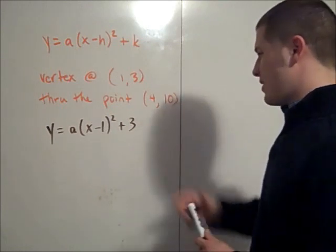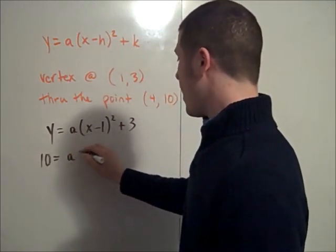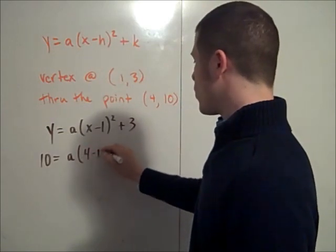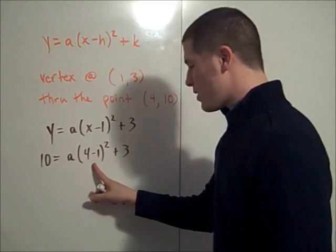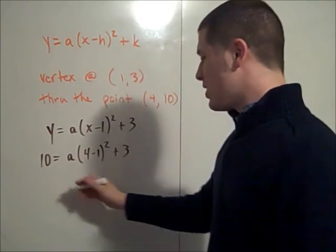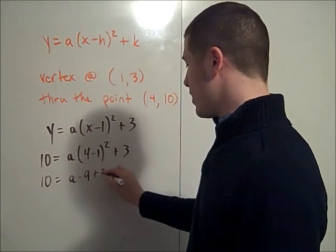We'll substitute 4 in for x and 10 in for y. So 10 is equal to a times (4 minus 1) squared plus 3. Well, 4 minus 1 is 3, and 3 squared is 9. So this tells me that 10 is a times 9 plus 3.